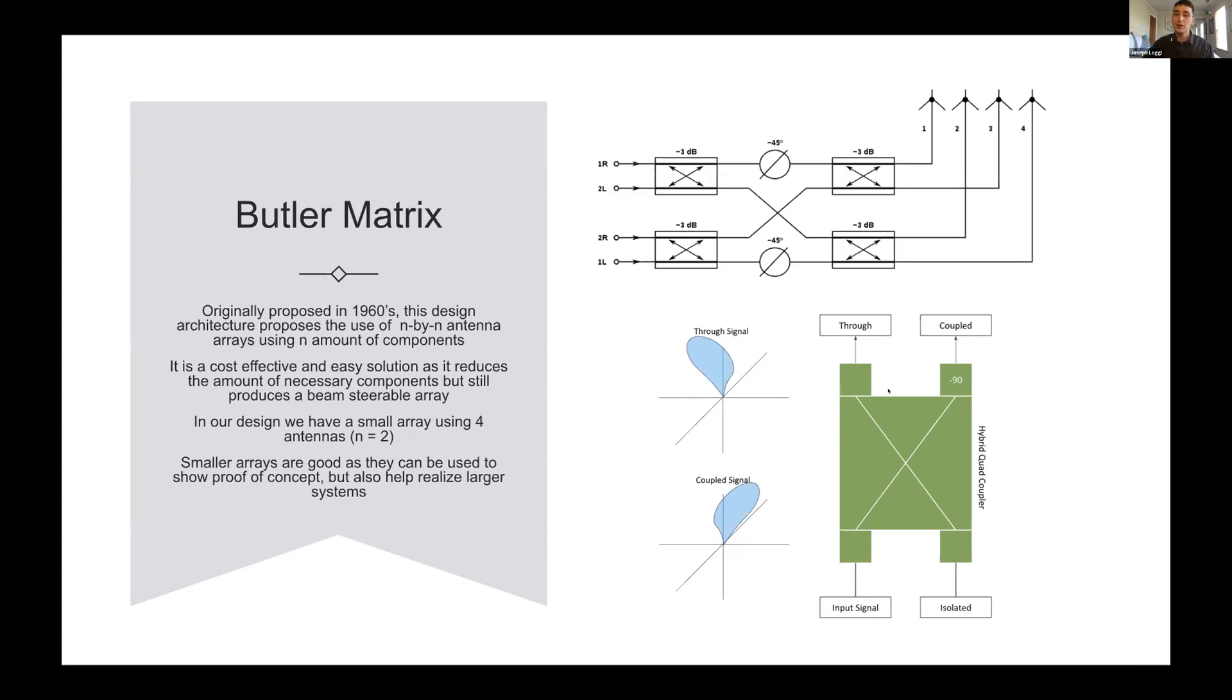Another interesting thing about the hybrid coupler is that if we actually input into the fourth terminal instead of the first terminal, we can have a reverse. This will be the throughput and this will be the phase shift. By utilizing this design, we can actually reduce components, which makes our design a little bit cheaper, which is an added benefit. Although we're making a very small antenna array, this design can be used to realize larger systems where that can be implemented.